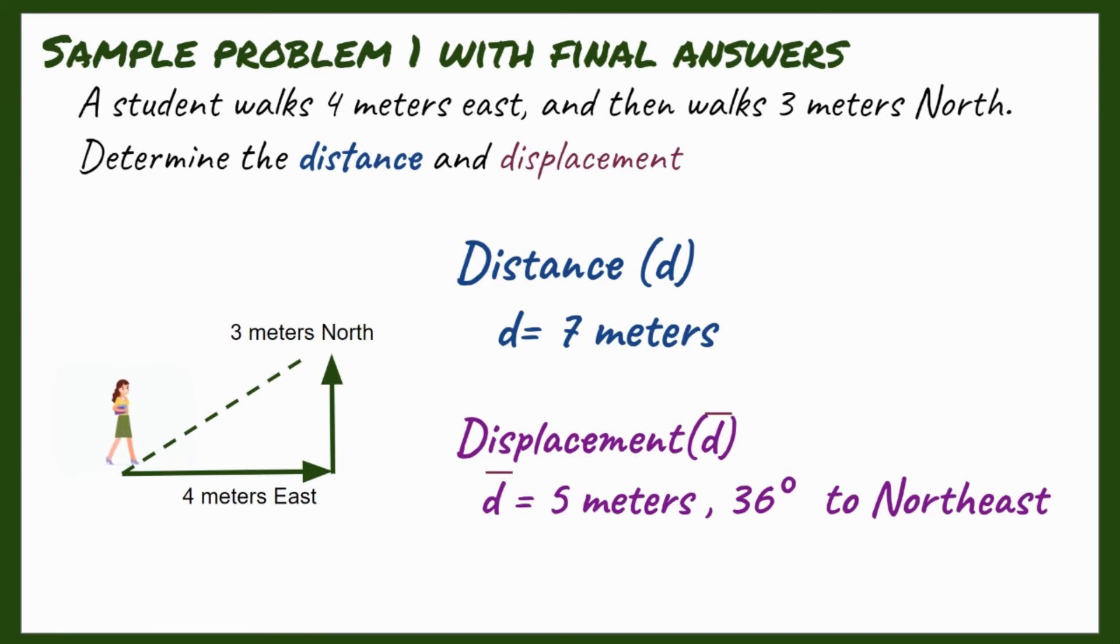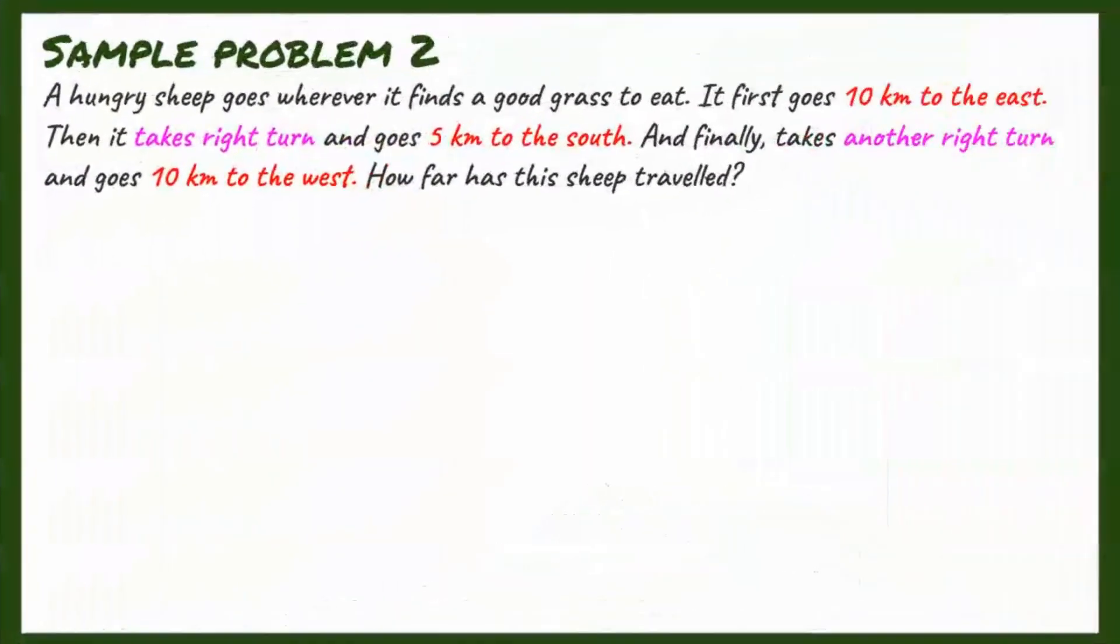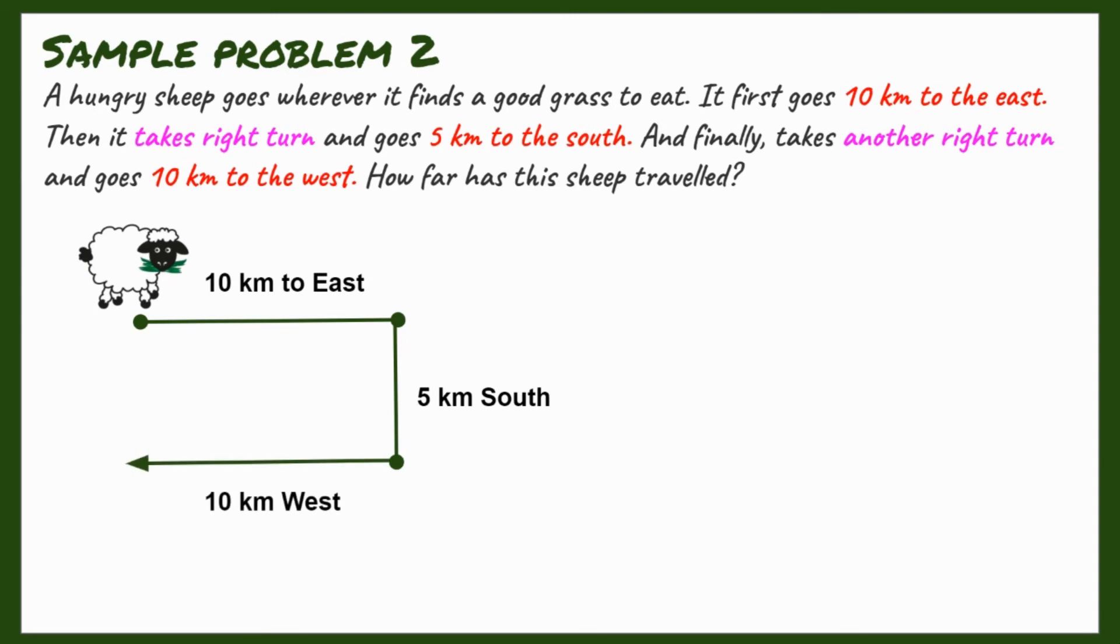Alright, so here's another example. A hungry sheep goes wherever it finds good grass to eat. It first goes 10 kilometers to the east. Then, it takes a right turn and goes 5 kilometers to the south. And finally, takes another right turn and goes 10 kilometers to the west.